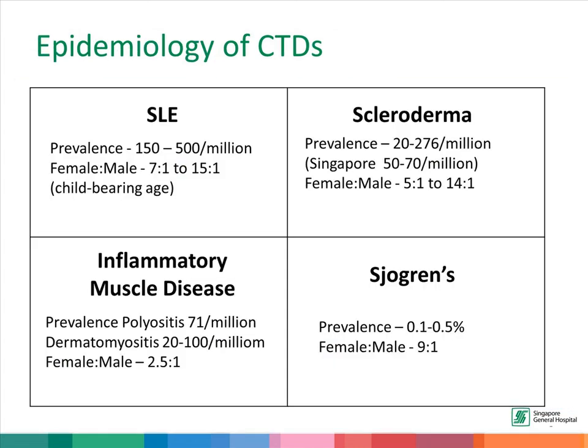This slide shows the epidemiology of the CTDs. CTDs are uncommon, and yet they are still important diseases. Sjogren's syndrome is the most common, with prevalence reported in a range from 0.1% to 0.5%. All these CTDs tend to affect women rather than men — for example, for every male patient with SLE, there may be 7 to 15 women with the same condition.